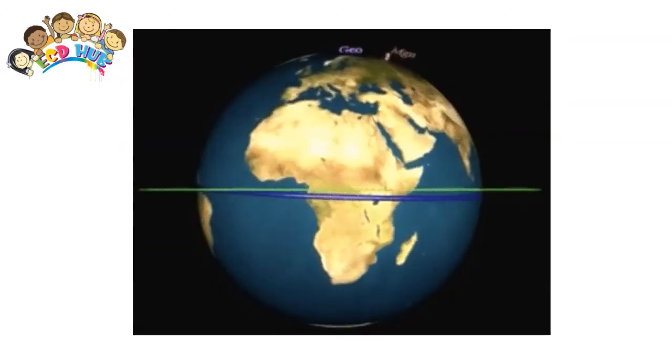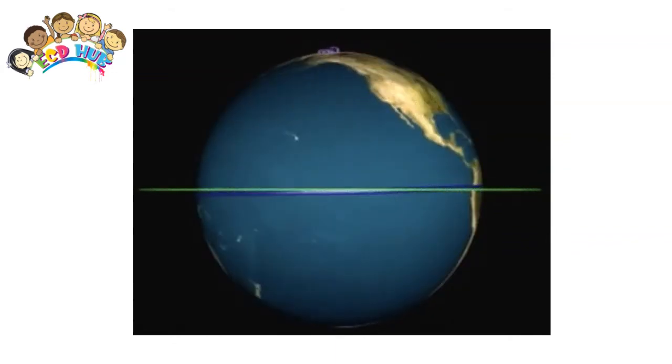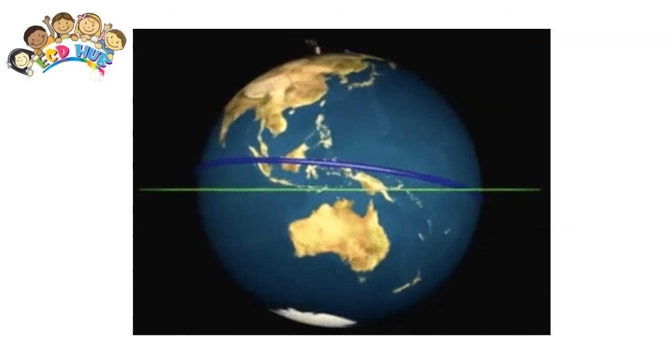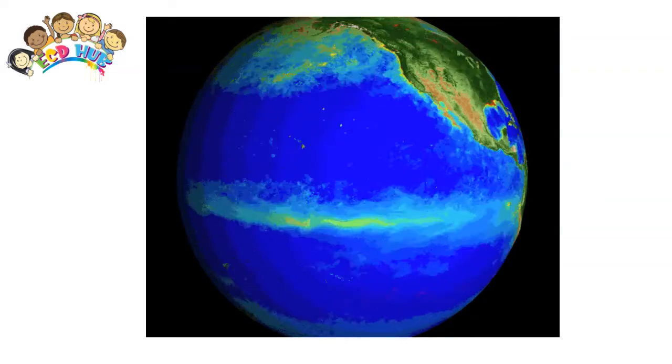For this reason, seasons north of the equator are the opposite of seasons south of the equator. When it's winter in Europe and the United States, it will be summer in Brazil and Australia.